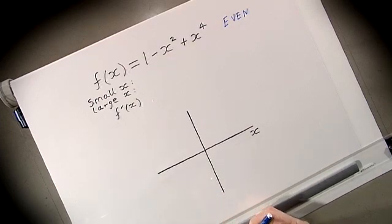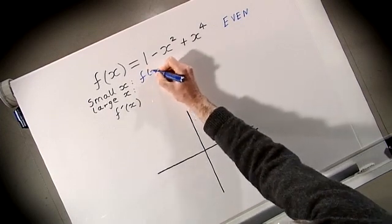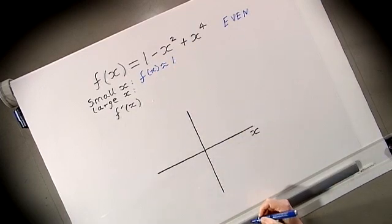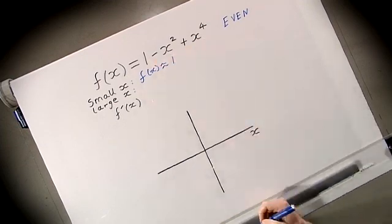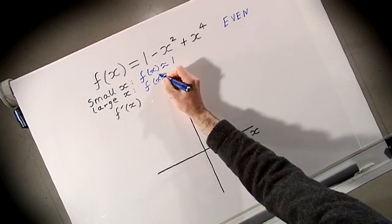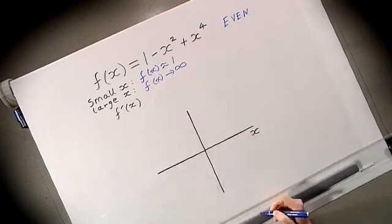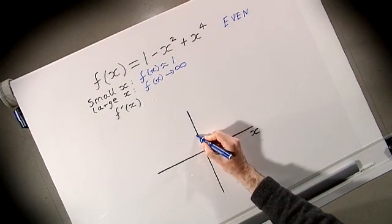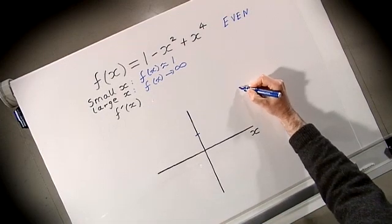When x is very small, we can see that the function is approximately equal to 1. When x gets very large, the x⁴ term is the largest and that approaches infinity as x goes to infinity. So for large x, f(x) tends to infinity. We can immediately note that when x is 0 the function takes the value 1, and when x is very large the function approaches infinity.